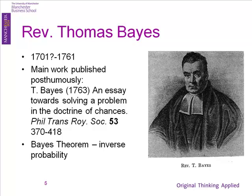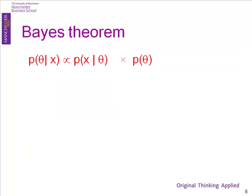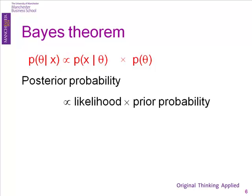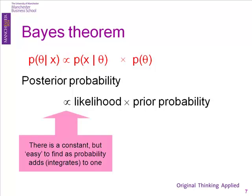And it's very simple — there are only two theorems in the whole subject area. It looks horrible, but let's start by changing it into language. It says: what you believe in advance about something, times how likely the data is that you get, gives you what you should believe afterwards.